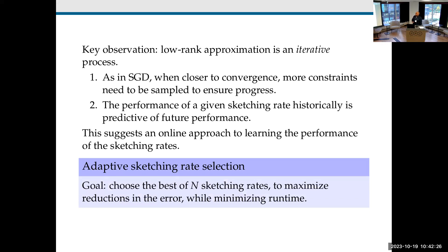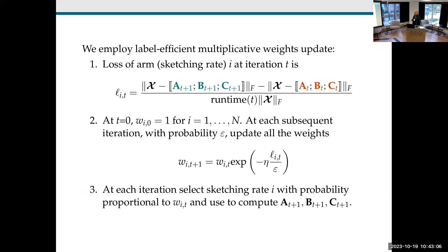The key observation is that this is an iterative process. As in SGD, when you're closer to convergence you need to sample more constraints. Also, the historical performance of the sketching rate is probably predictive of future performance. This suggests an online approach to learning your sketching rates. We allow the user to specify some set of sketching rates, and over time this algorithm will select the best-performing one. The user should also allow the sketching rate to be one — preserving the entire system — which guarantees convergence. We employ a label-efficient multiplicative weight update algorithm.